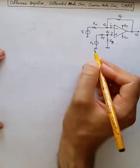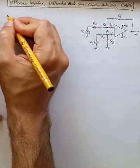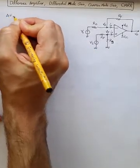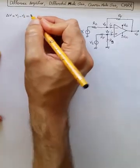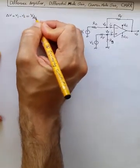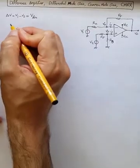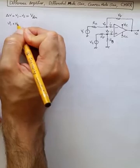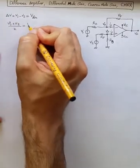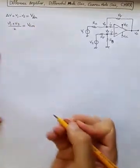Given V1 and V2, we can write down delta V as V1 minus V2, also known as voltage of differential mode at input. We can also say V1 plus V2 divided by 2, or the average of V1 and V2, is voltage of common mode.